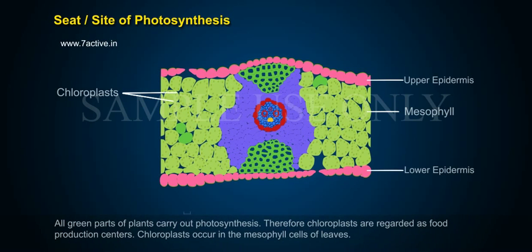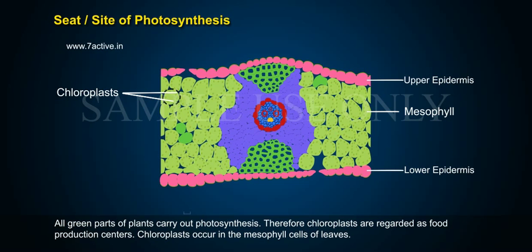All green parts of plants carry out photosynthesis. Therefore, chloroplasts are regarded as food production centers. Chloroplasts occur in the mesophyll cells of leaves.